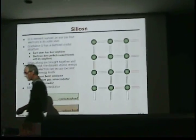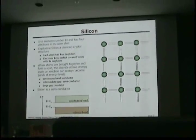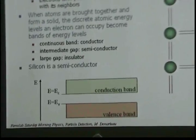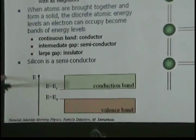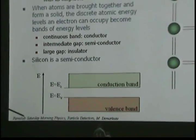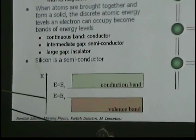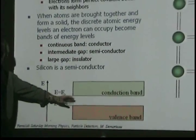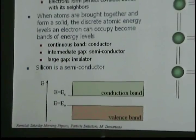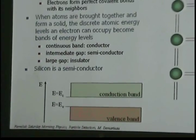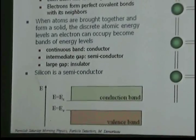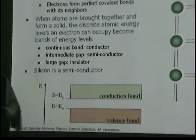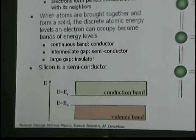What I can have is one continuous band where electrons can occupy any level — when I have that, I have a conductor, like iron, aluminum, or copper. Or I can have a very big gap between bands, and then I have an insulator, like glass. Or I can have a relatively small gap, and then I have a semiconductor. And silicon is a semiconductor.